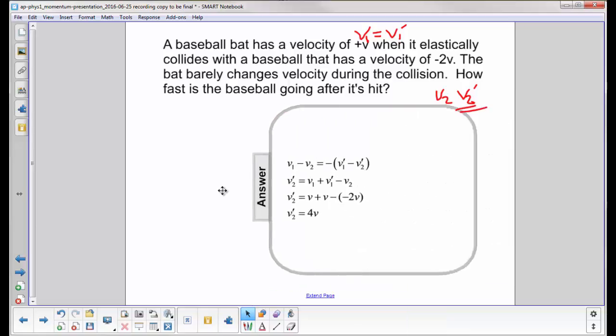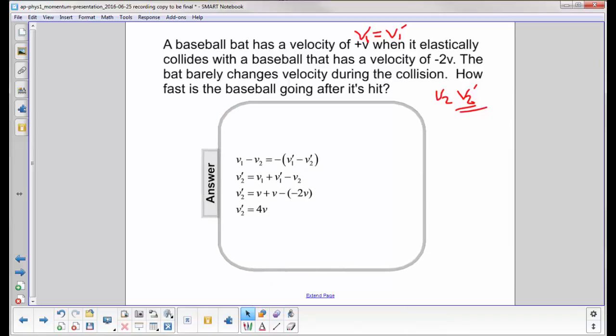So this is a relative velocity problem, it's an elastic collision, so the relative velocity of the bat and ball in the beginning have to equal negative of the relative velocity of the bat and ball after the collision.